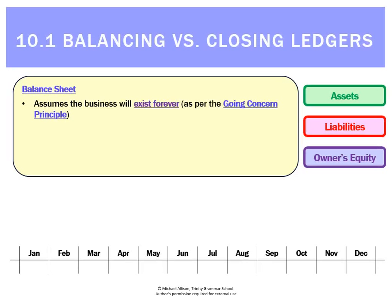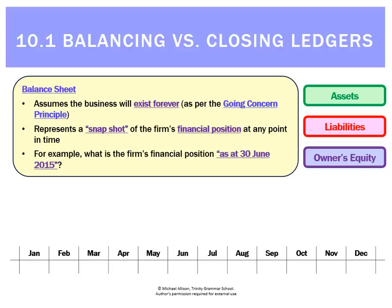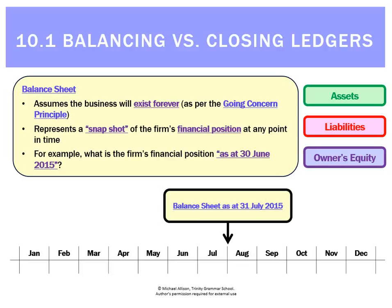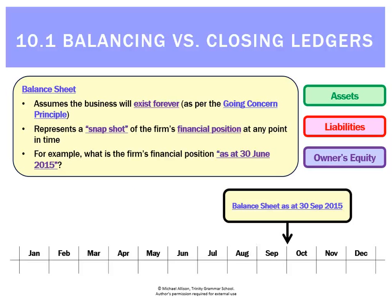A balance sheet assumes the business will exist forever — that goes back to our going concern principle. It represents a snapshot or a photo of the firm's financial position at any point in time. For example, we might prepare a balance sheet as at the 30th of June 2015. A month later, we prepare another one, and another one, and so on. It's not specific to any period — it's just the current balance sheet at that point in time.